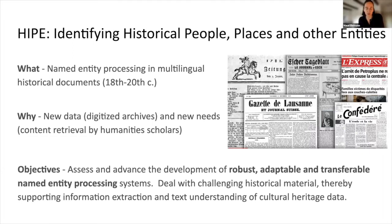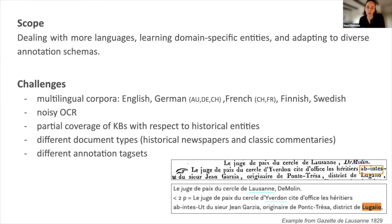The objective of this evaluation lab is to assess and advance the development of robust, adaptable, and transferable entity processing systems across time periods, languages, and document types. HIVE 2022 is a follow-up of the first edition in 2020, which focused on entity processing on newspapers in three languages where 13 teams participated. This year the shared task will confront systems with the challenge of dealing with small languages, learning domain-specific entities, and adapting to diverse annotation schemas.